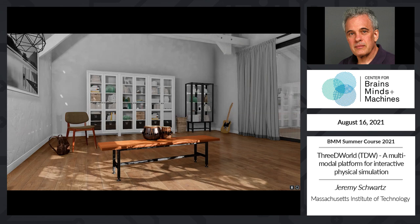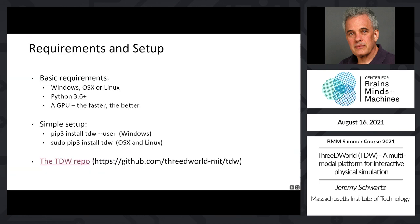The basic requirements for running TDW are: Windows, OSX, or Linux; Python 3.6 or greater; and ideally a GPU — the faster the better. It is possible to run TDW on a laptop without a GPU, but performance will be hampered since this is real-time 3D rendering. Some functionalities such as audio/video recording have additional requirements, which are spelled out in the TDW documentation. TDW setup is a simple pip install and includes all required dependencies.